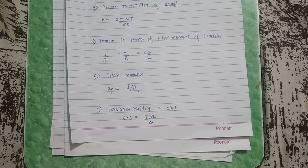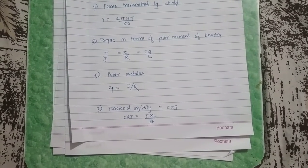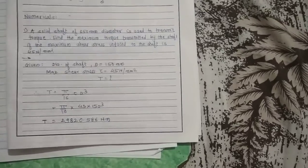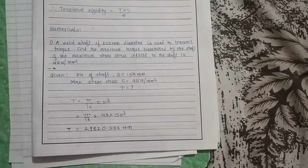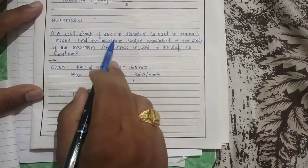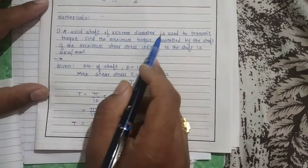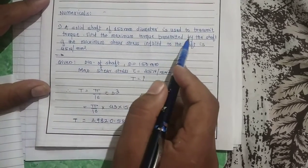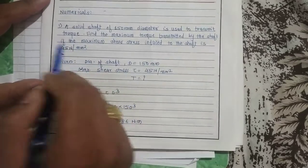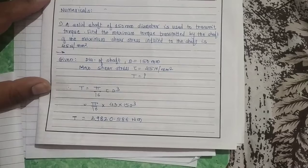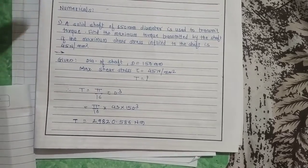Numerical one: a solid shaft of 150 mm diameter is used to transmit torque. Find the maximum torque transmitted by the shaft if the maximum shear stress induced in the shaft is 45 N per mm square.